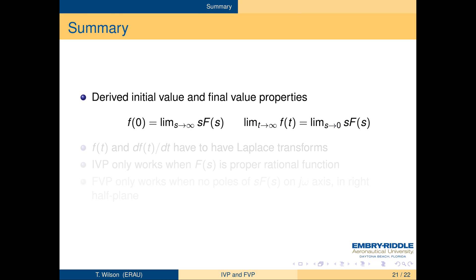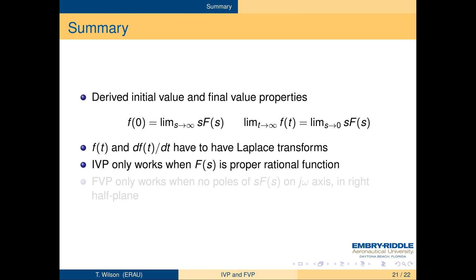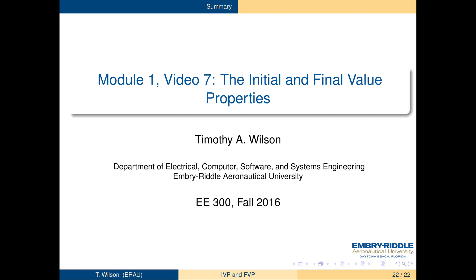In summary, we derived the initial and final value properties of the Laplace transform: f(0) is found by taking the limit of s·F(s) as s goes to infinity, and the limit of f(t) as t goes to infinity is found by taking the limit of s·F(s) as s goes to 0. The initial value property yields a finite value only when F(s) is a proper rational function, and the final value property only works when s·F(s) has no poles on the j-omega axis or in the right half plane. This has been EE300 Fall 2016 Module 1 Video 7, the initial and final value properties.